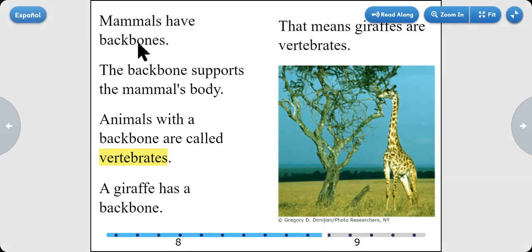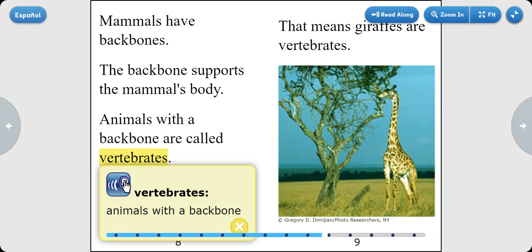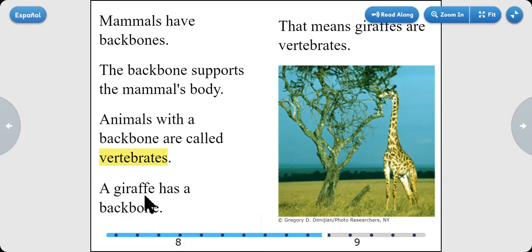Mammals have backbones. The backbone supports the mammal's body. Animals with a backbone are called vertebrates. A giraffe has a backbone. That means giraffes are vertebrates. This is a giraffe.